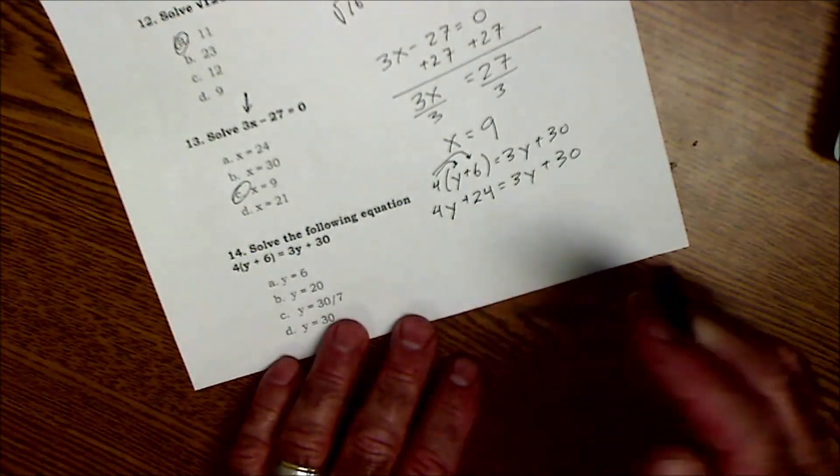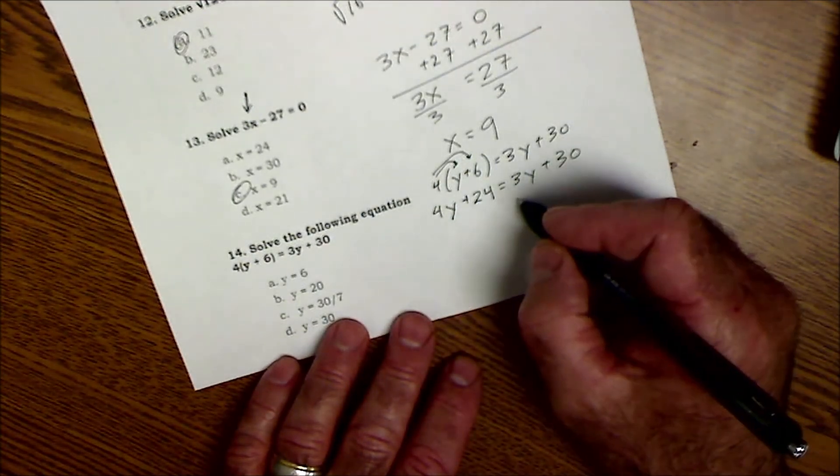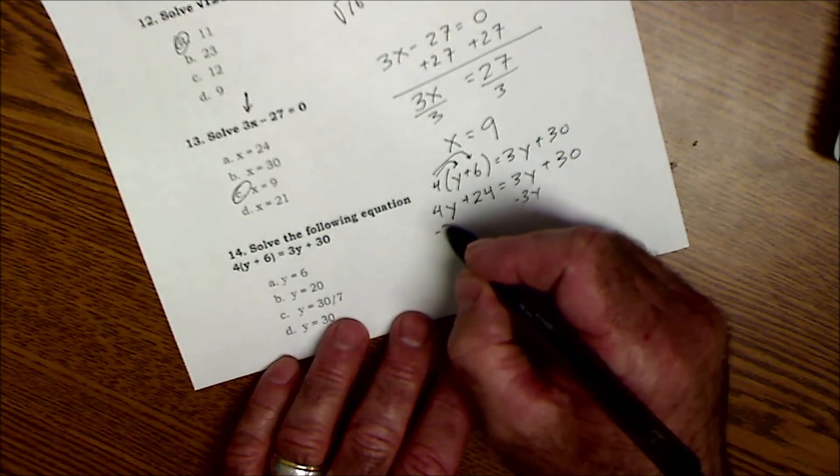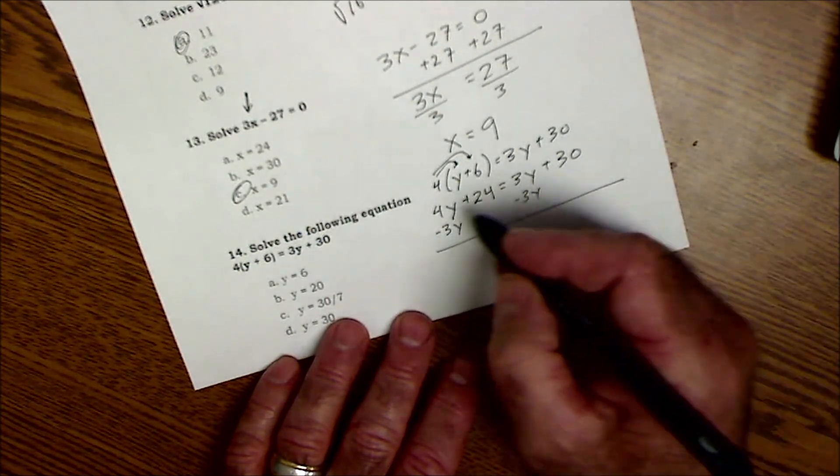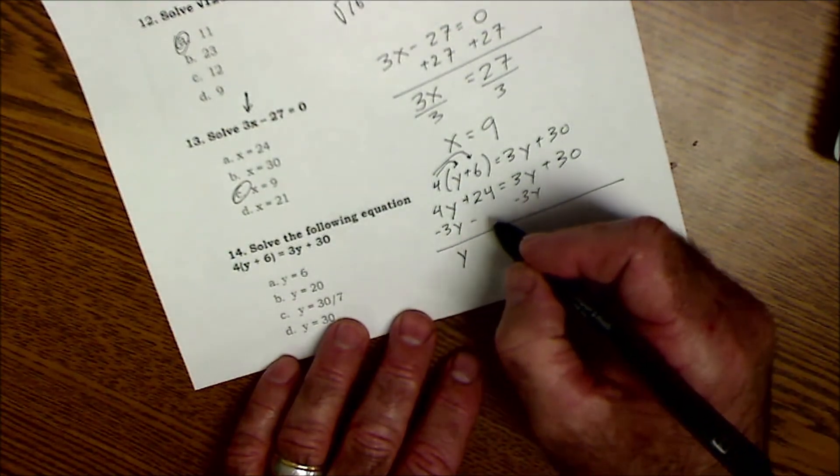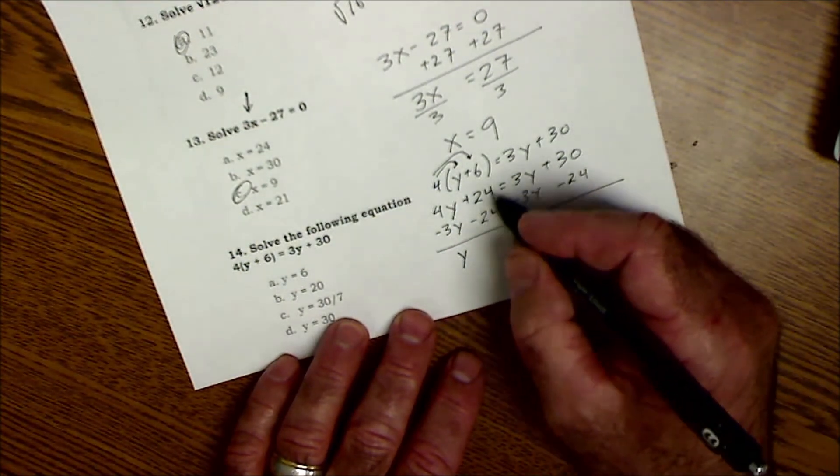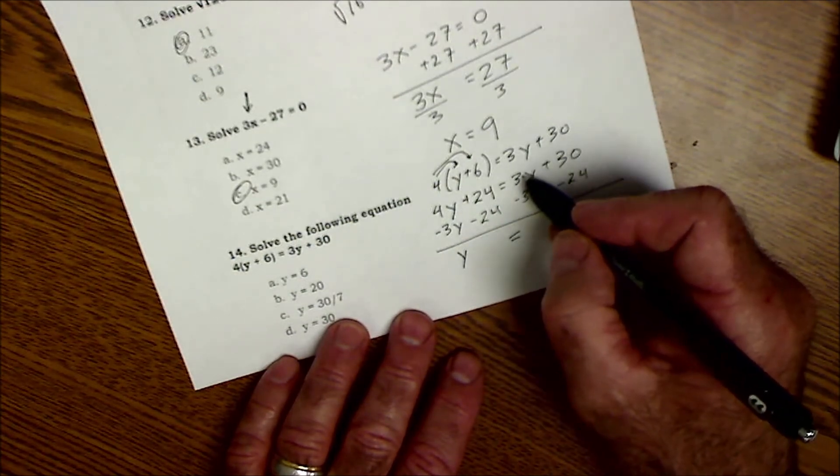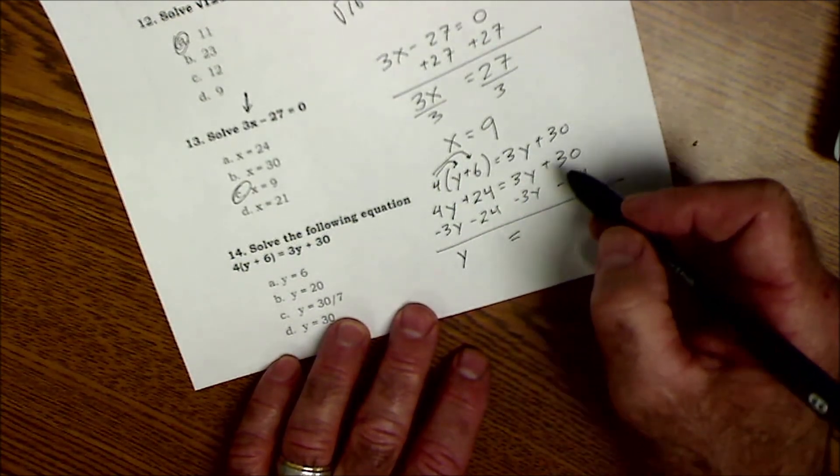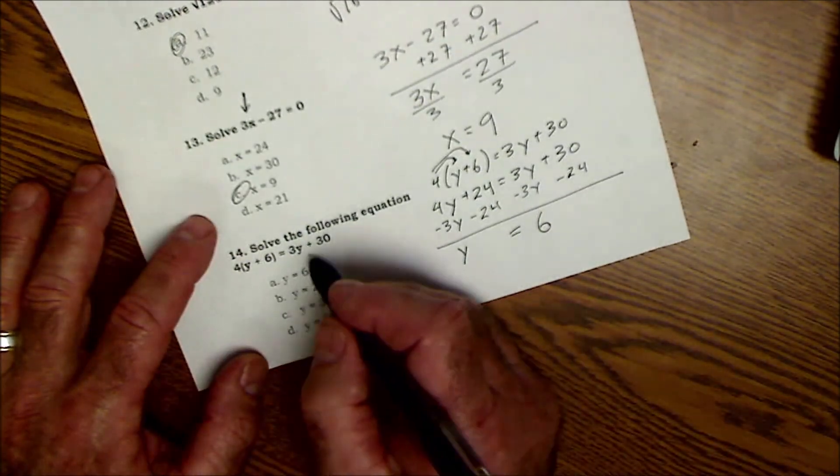Again, I want to do whatever I can on both sides to get that y by itself. So I'll subtract 3y from both sides. 4 of these minus 3 of these is one of them. I'll subtract 24 from both sides. 24 minus 24 those will cancel, 3y minus 3y cancels, 30 minus 24 is 6. So y is equal to 6. There's my answer right there.